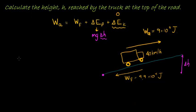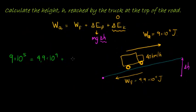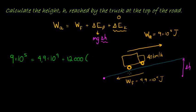We know that the work applied is 9×10⁵ Joules. The work done to overcome friction is 4.9×10⁴ Joules. The change in potential energy is mass—which they gave as 12,000 kilograms—times gravity (9.8) times Δh. And we have no change in kinetic energy, so that is simply zero.